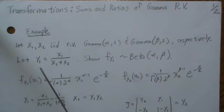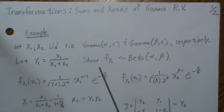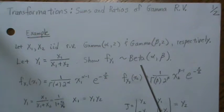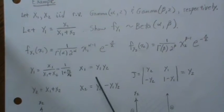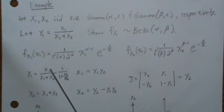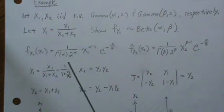And we want to look at this transformation Y1 = X1/(X1+X2) and we want to show that it is a beta distribution. So we look at the distribution for X1, and it's this.